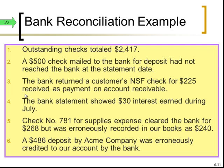Number three: the bank returned a customer's NSF check for $225 received as payment on accounts receivable. The bank returned it and already reduced it from the bank side. In our books, we originally increased cash by that amount, but now we know it's not good cash, so we need to subtract it out of our book side.